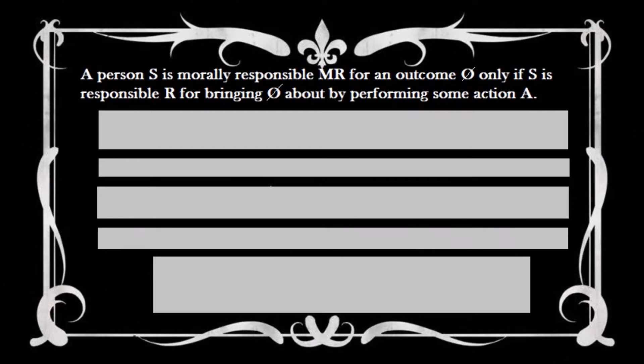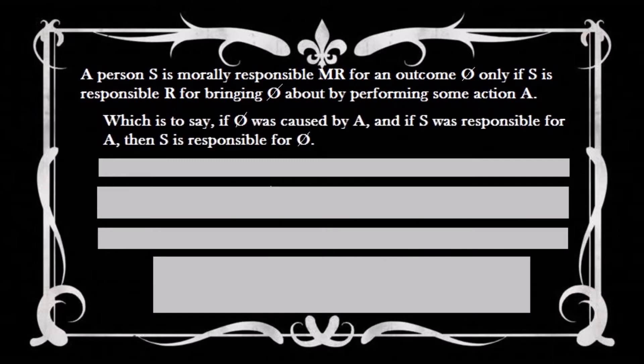First, let's discuss the model of human freedom and moral responsibility that Frankfurt addresses. Let's call this the normative model, to call attention to the fact that this way of looking at human freedom and moral responsibility is both widely accepted and believed to be the way that we should look at this phenomenon. The normative model uses the following logic: a person is morally responsible for an outcome only if that person is responsible for bringing that outcome about by performing some action — which is to say, if that outcome was caused by that person's action and that person was responsible for that action, then that person is responsible for the outcome.